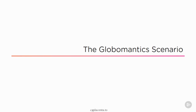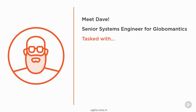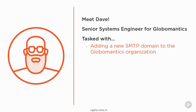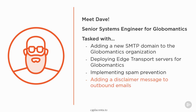For the demonstrations in this course, we'll be looking at the Globomantics scenario. I want you to meet my good friend Dave. Dave is the Senior Systems Engineer for Globomantics, and he's been tasked with adding a new SMTP domain to the Globomantics organization, deploying Edge Transport servers, implementing some spam prevention, adding a disclaimer message for outbound emails, and configuring a shared SMTP namespace for a part of the company that is divesting and splitting off into their own Exchange organization.